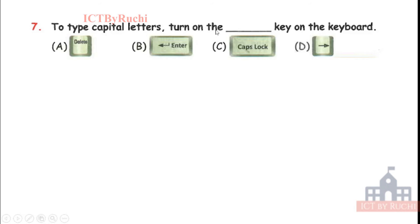To type capital letter, turn on the dash key on the keyboard. A, delete. B, enter. C, caps lock. D, right arrow. Tell me the answer. Answer is C, caps lock.